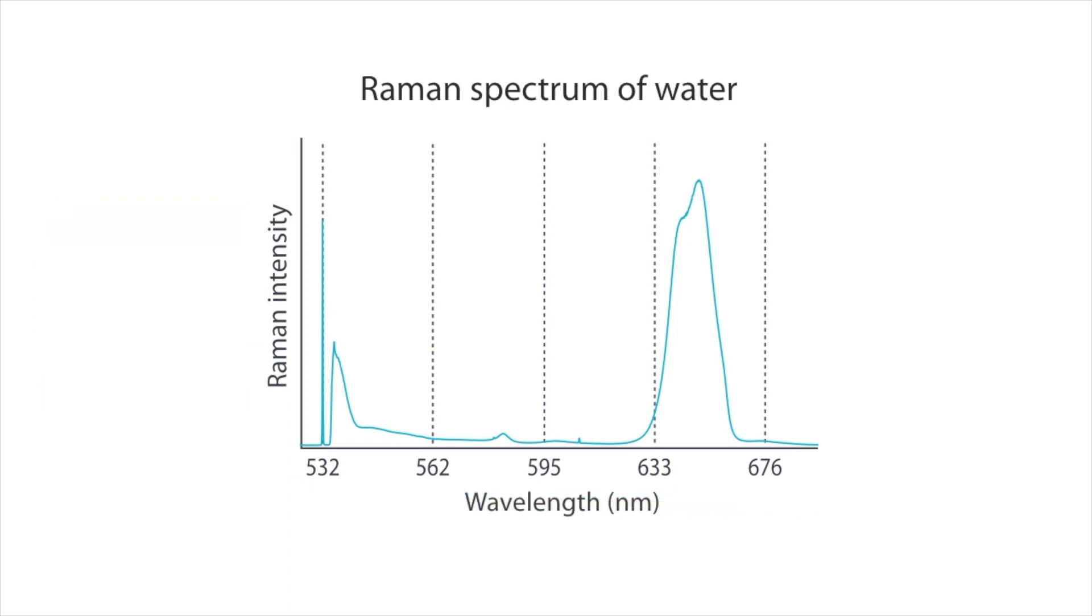Usually, the horizontal axis of a Raman spectrum is indicated by wavenumber, not wavelength. By using wavenumber, we see the Raman spectrum of water independent of the excitation wavelength.